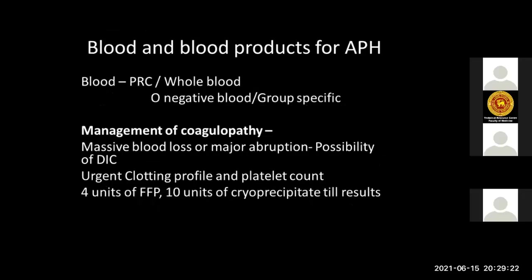For massive or major antepartum hemorrhage, transfusion may be needed. Go for packed red cells or whole blood. If blood is urgently needed, use O-negative or group-specific blood until crossmatched blood is available. Manage coagulopathy — particularly DIC in massive blood loss or major abruption. Perform urgent clotting profiles, but while awaiting results, start empirically with 4 units of FFP and 10 units of cryoprecipitate to prevent DIC.